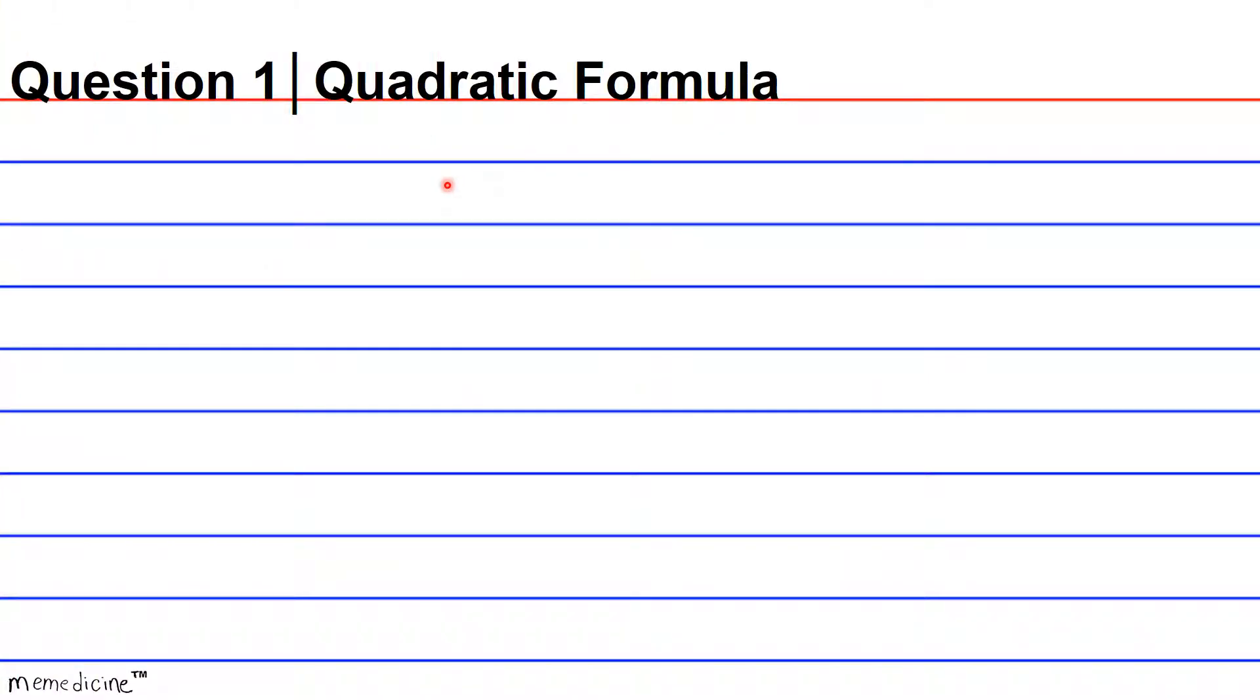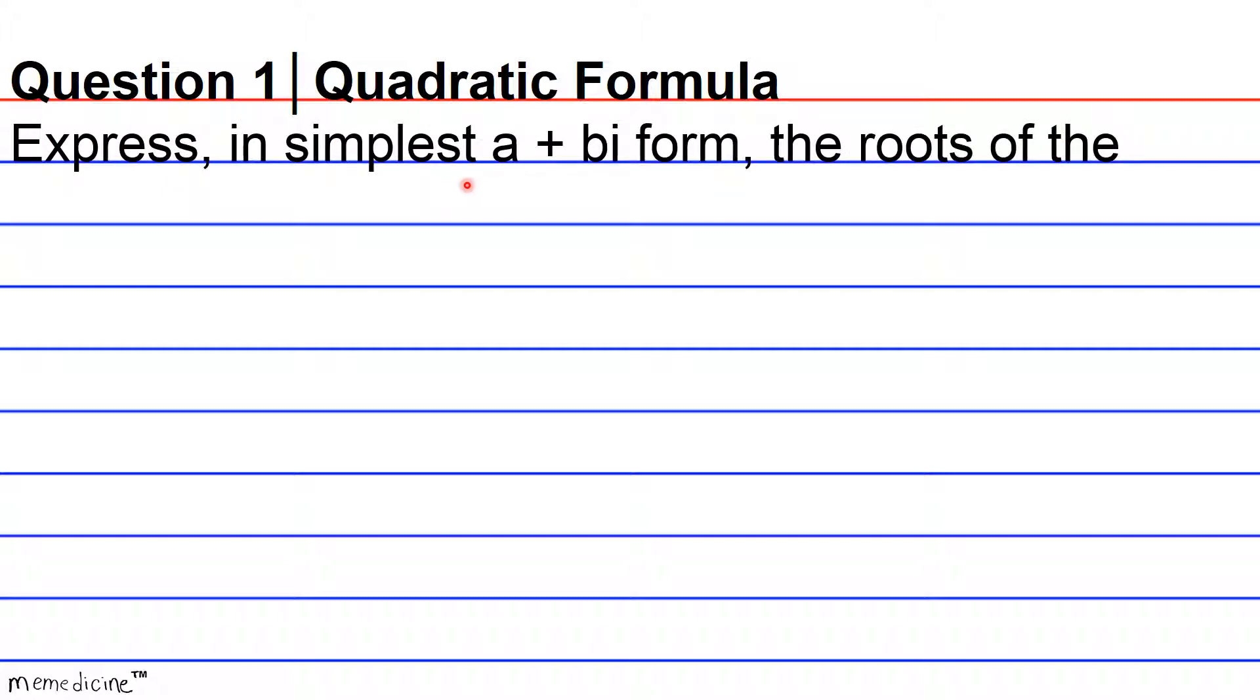Question 1, Quadratic Formula. Express in simplest a plus bi form the roots of the equation x squared plus 5 is equivalent to 4x. Definitely press pause if you need to and I'll give you a moment to think.